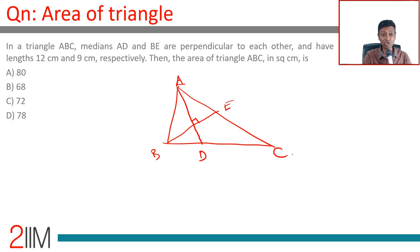AD is 12, BE is 9. Again, a wonderful question that I struggled with. How do we do this? We need to find the area of triangle ABC. Think about this: if we find the area of triangle ABD and multiply by 2, this becomes an easy question.